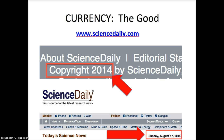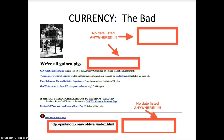Now let's look at a website with bad currency. This is PinkNoise.com, a website supposed to be about the Cold War. I looked at the bottom, the top, the middle — I looked everywhere — and there's no date listed. I would not use this website simply because I don't know how old this information is. I don't know when it was created or the last time anything was put on it. I'm going to pass on this one as far as currency. That's the C in CAPOW — let's move on to the A: authority.